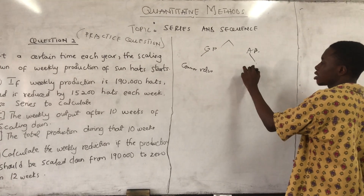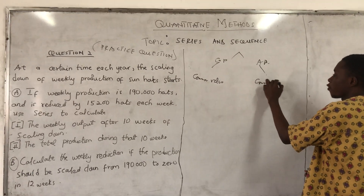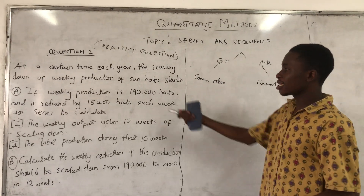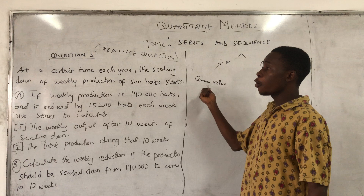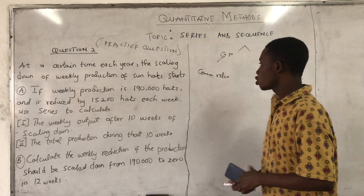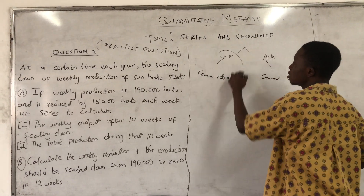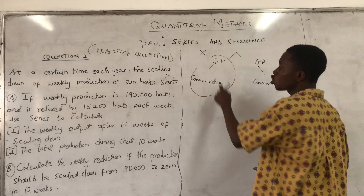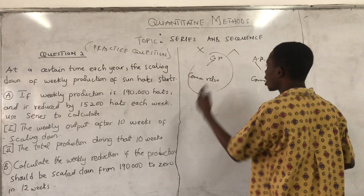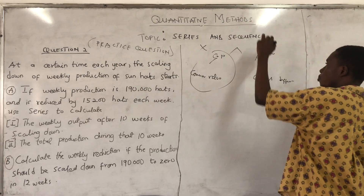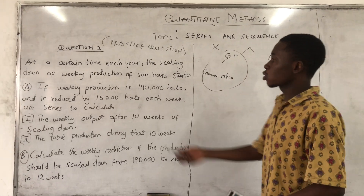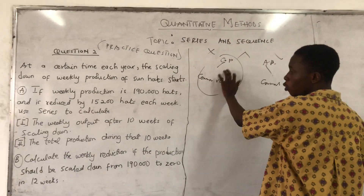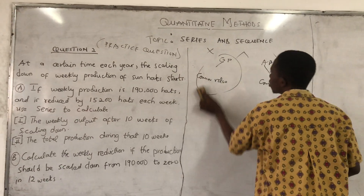Arithmetic progression: there is a common difference. Now, is there any percentage in the question which is going to give me a ratio? No. So meaning I am not able to use geometric progression. Once I am not able to use geometric progression, then I am going for the other one — arithmetic progression. So this particular question is going to use arithmetic progression to solve it.